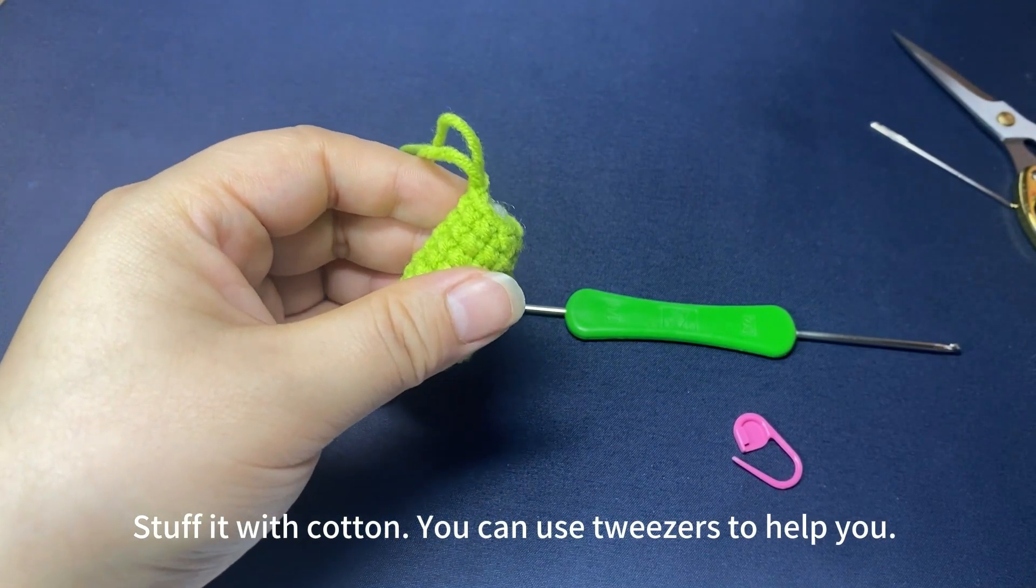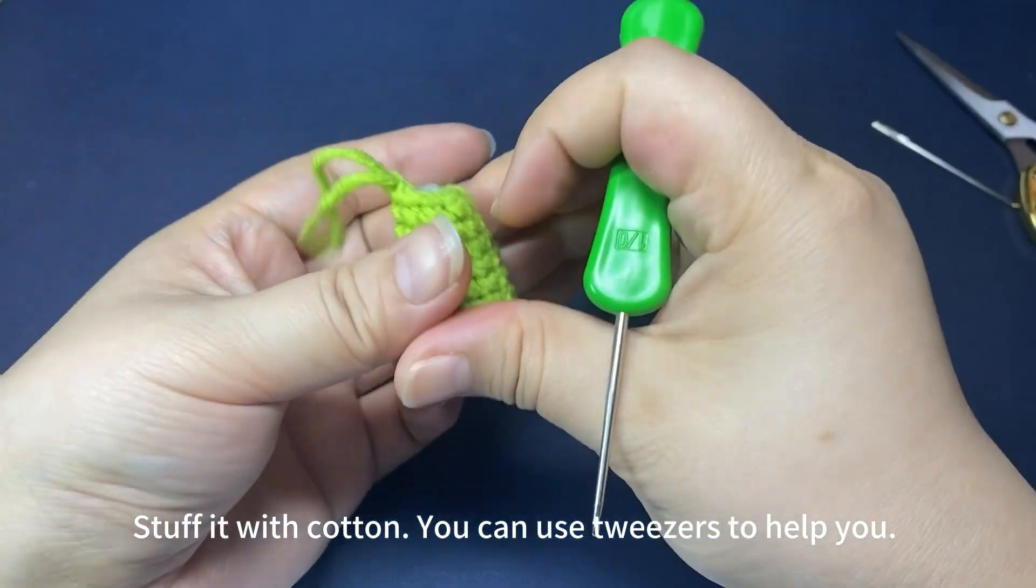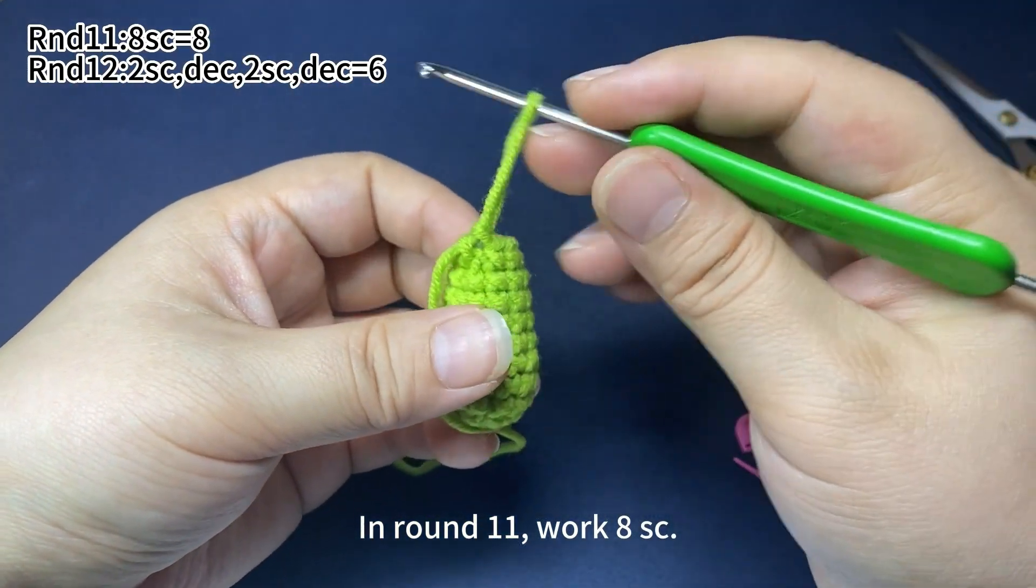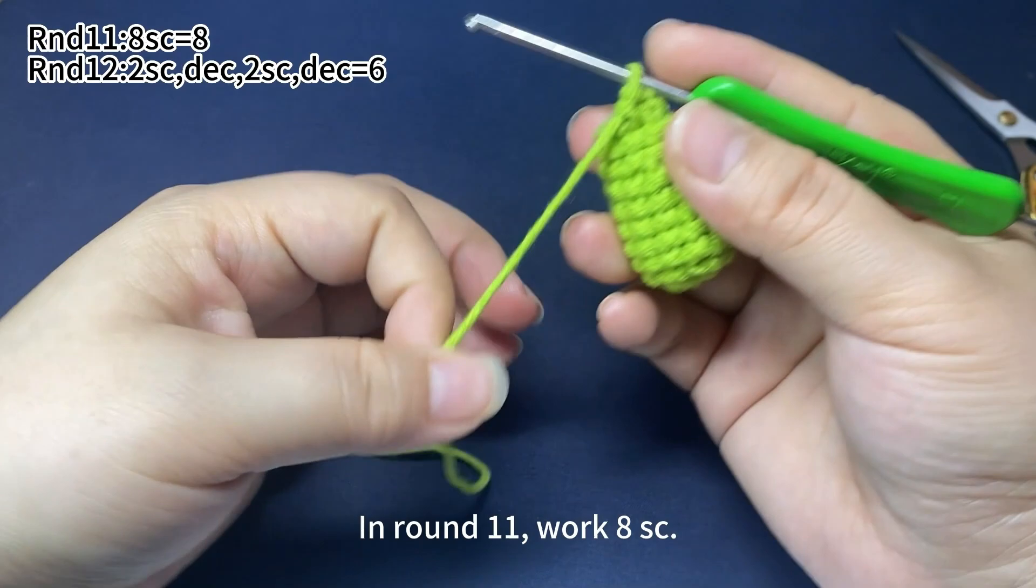Now place the hook back into the loop and continue to work. In round 11, work 8 single crochets.